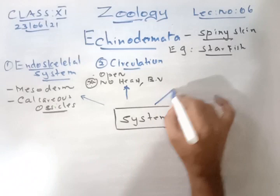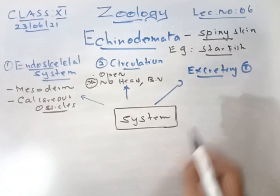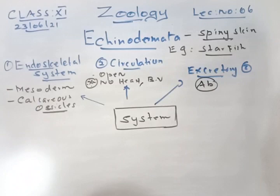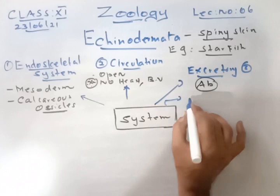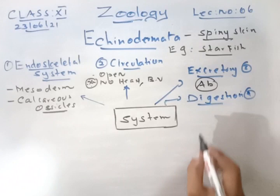Fifth system: nervous system — it is poorly developed, not perfectly developed. Sixth system: the water vascular system — very important. It is carried out by tube feet and podia.